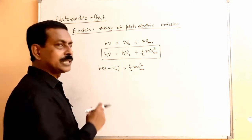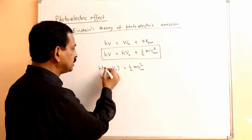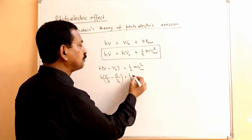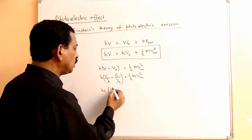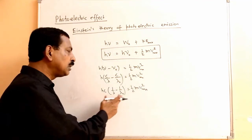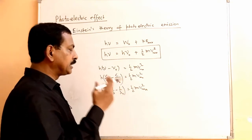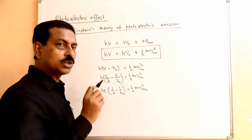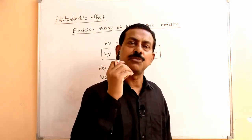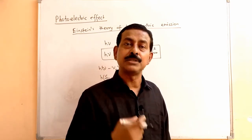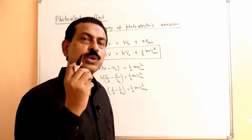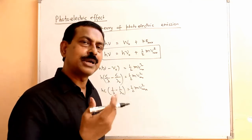Einstein's equation can also be written in terms of wavelength. Since ν = c/λ and ν₀ = c/λ₀, the equation becomes: hc(1/λ - 1/λ₀) = ½mv²_max, where λ₀ is the threshold wavelength and λ is the wavelength of the incident radiation. Students should know both forms — frequency and wavelength — since numerical problems may provide data in either form.